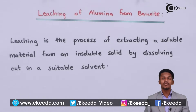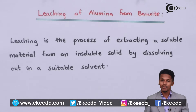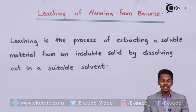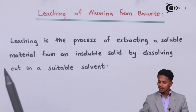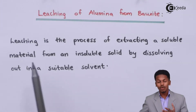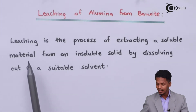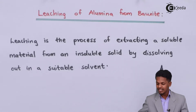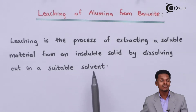Before understanding leaching of alumina from bauxite, it is very important for us to understand the term leaching. So what is leaching? Leaching is the process of extracting a soluble material from an insoluble solid by dissolving it out in a suitable solvent.